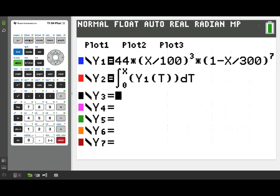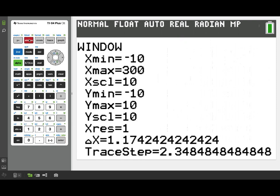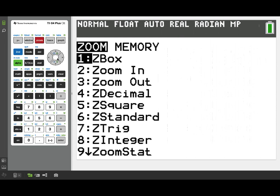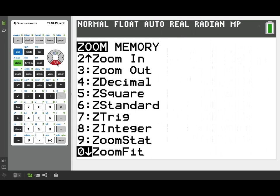Now since this is the accumulation, our window settings might not be appropriate. And if you don't have a good idea of what would be a good window, of course you could try some things by trial and error. But there's a zoom setting that's very useful in this case. It's called zoom fit. We have to go all the way down to item 0.